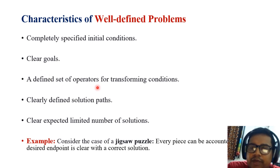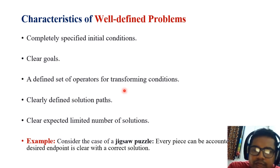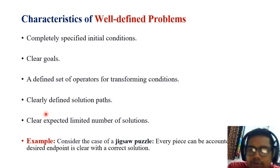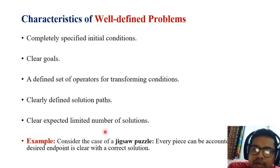A well-defined problem also requires a set of operators for transforming conditions — suppose we need to transform from one domain to another, we require a perfect transformation. There must be a clearly defined solution path; unless we have a solution path, we cannot have a well-defined problem. Additionally, there should be a clear, expected, limited number of solutions — sometimes a unique solution, but the number of solutions must be finite.